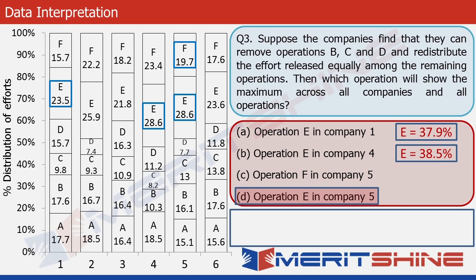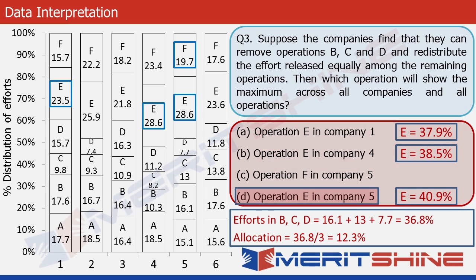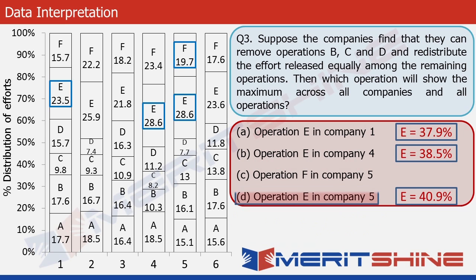The total effort for B, C and D in company 5 is the sum of 16.1, 13 and 7.7 which gives us 36.8. And the allocation to each of the rest of the companies would be 36.8 divided by 3 which gives us 12.3%. Now the original value of E is 28.6. We add another 12.3 to it and end up with 40.9%. So there they are, the 3 values in front of us. The highest among them is 40.9. And so the answer has to be option D, operation E in company 5.